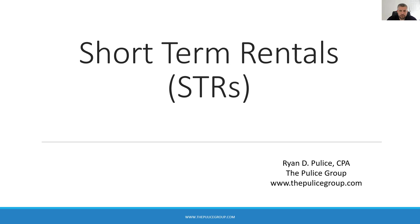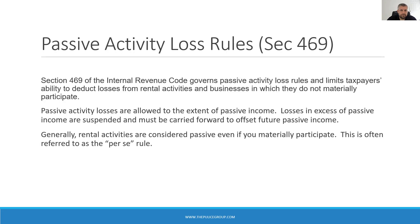Before we dive into short-term rentals, let's briefly review the passive activity loss rules. Passive activity loss rules prevent taxpayers from using passive losses to reduce non-passive income, like W-2 wages and active business income. Passive losses can only reduce passive income. Losses in excess of passive income are suspended and carried forward to future tax years to be used against future passive income. Rental activities are considered passive by default, even if you materially participate. This is often referred to as the per se rule — they are passive per se.